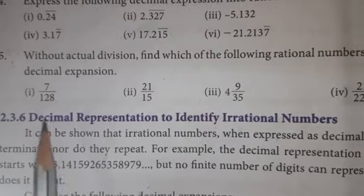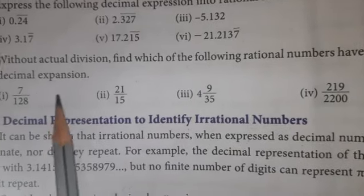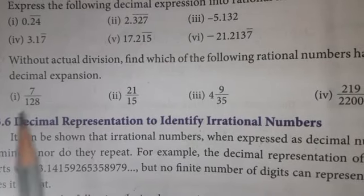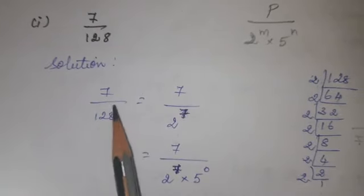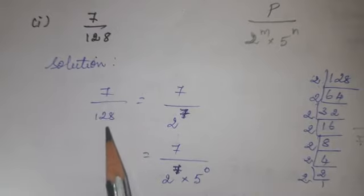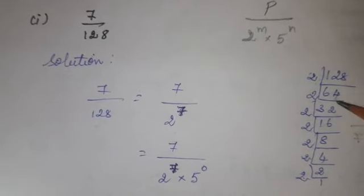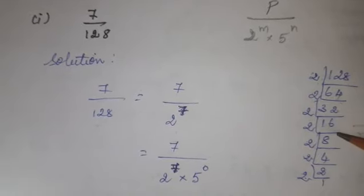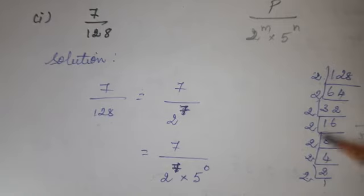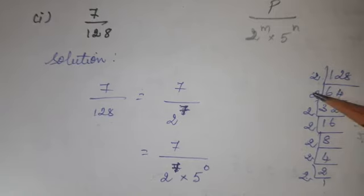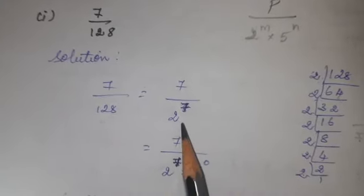5th question in the exercise: without actual division, find which of the following rational numbers have terminating decimal expansion. The first one: 7 divided by 128. Factorizing 128 in the 2 table: 128 → 64 → 32 → 16 → 8 → 4 → 2 → 1. How many 2s? 1, 2, 3, 4, 5, 6, 7. So 128 can be written as 2 power 7.